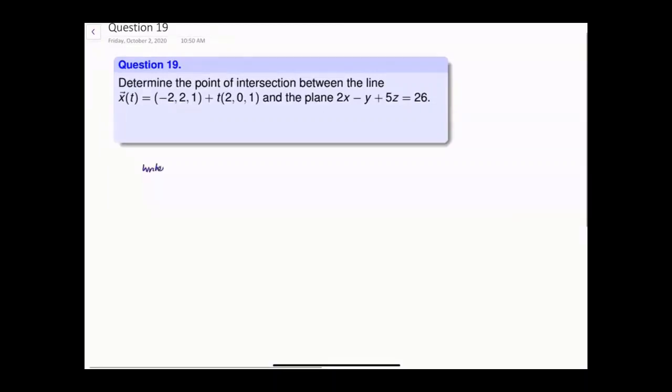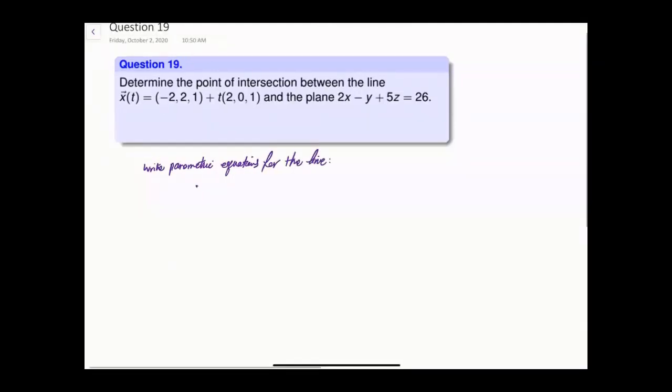So write parametric equations for the line. It is easy in this case because, well, this is the point, this is the parallel vector. So x will be -2 + 2t, y would be 2 plus 0t (so I don't write any t there), z is going to be 1 + t. This is step 1.